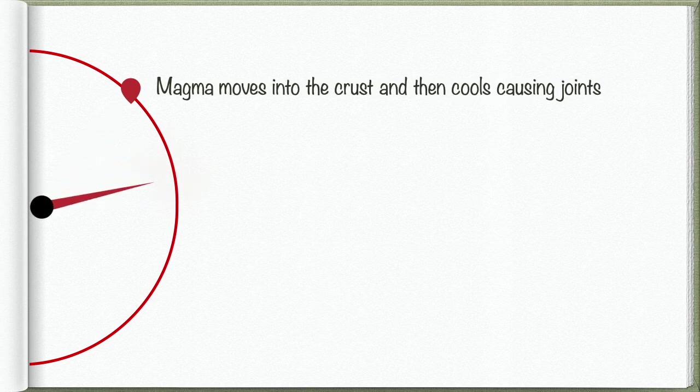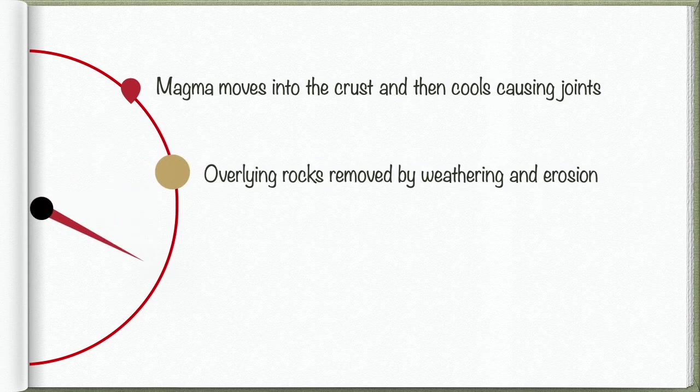So let us look at now the process and formation of the tor as a timeline. So first of all, what we get is magma coming into the earth's crust, cooling and then shrinking. And then the overlying country rock being removed, unbundling.